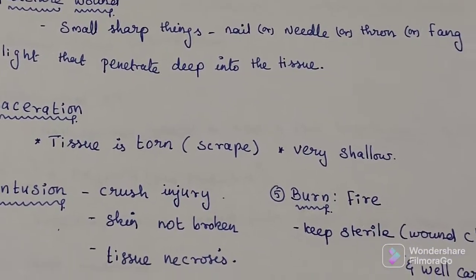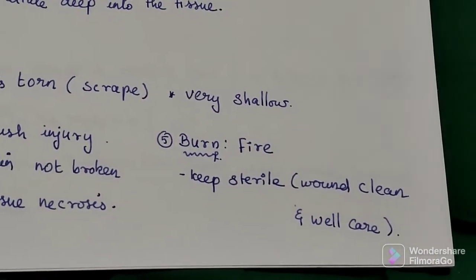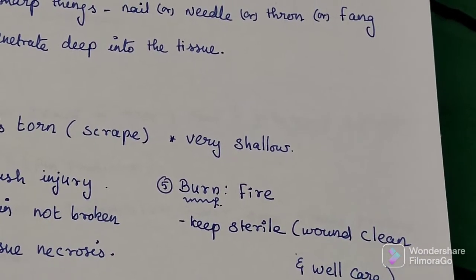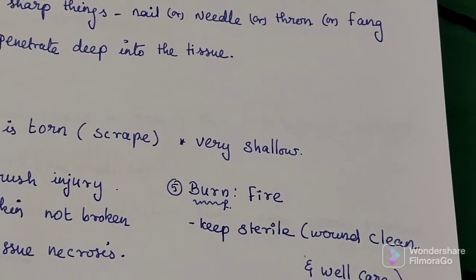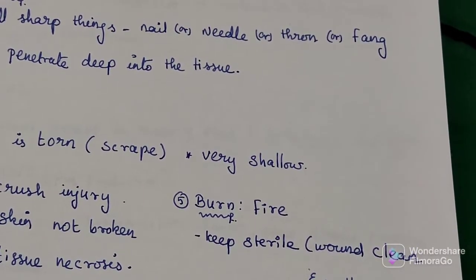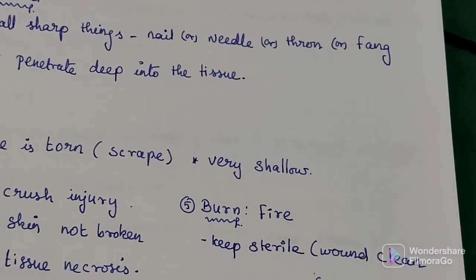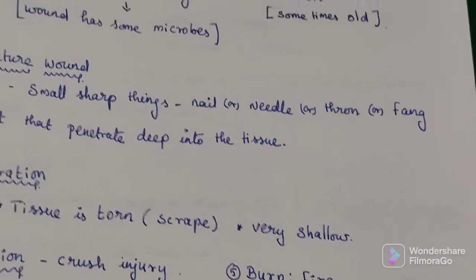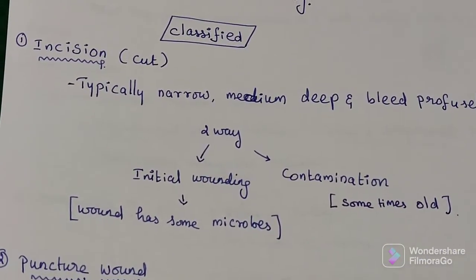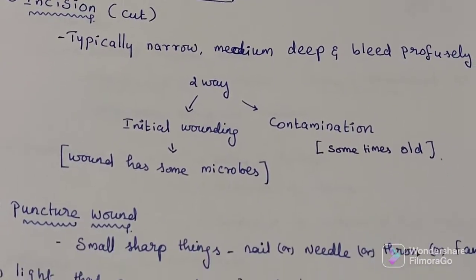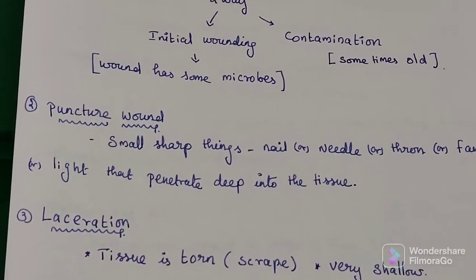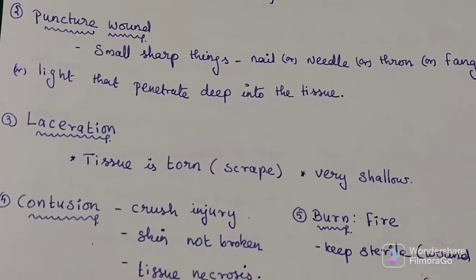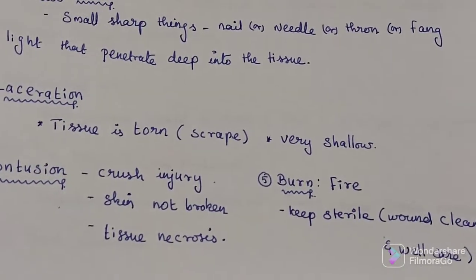The last type of wound is a burn. With burns, fire and microbes affect your skin, and keeping the wound sterile is a problem — keeping the wound clean and well cared for is essential. To summarize the types: first is incision, second is punctured wound, third is laceration, fourth is contusion, and fifth is burn.